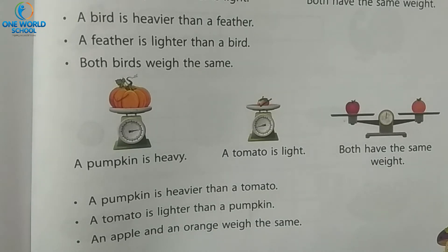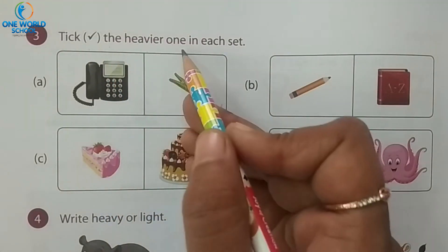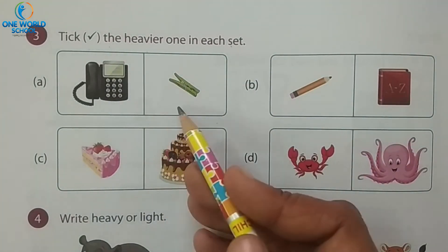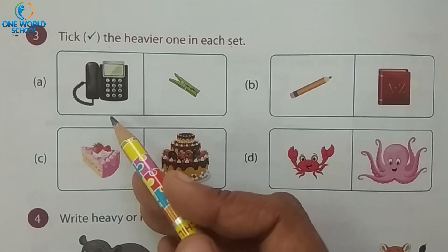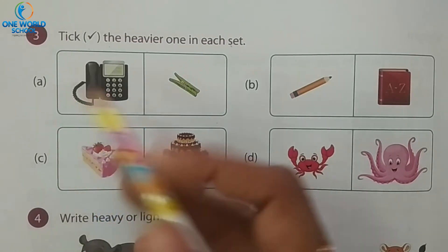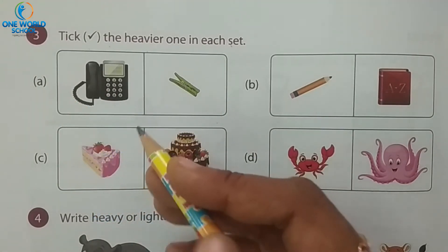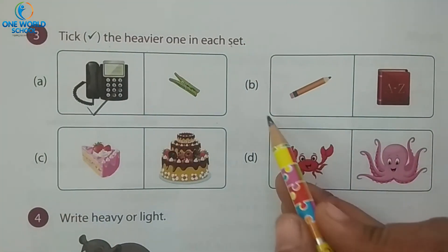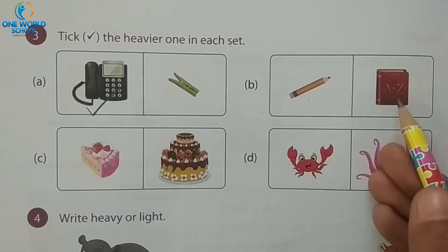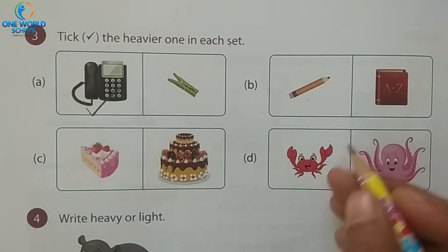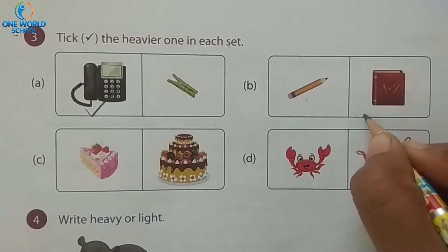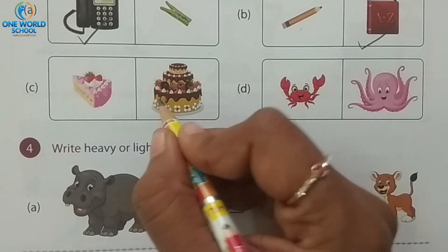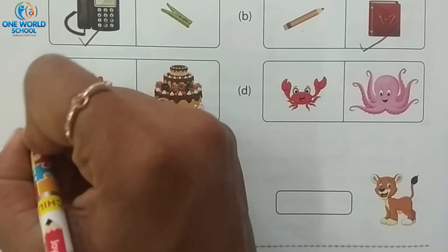Take page 154. Tick the heavier one. In each pair of pictures, tick the one that is heavy. Number A: telephone and clip — telephone is heavy, so tick telephone. Number B: pencil and book — book is heavier, so tick the book. Number C and D, complete as homework.